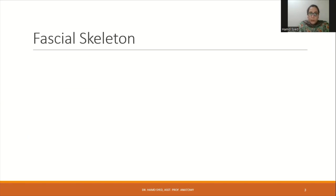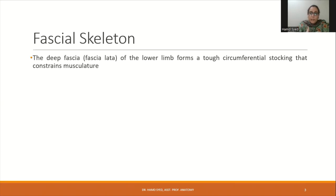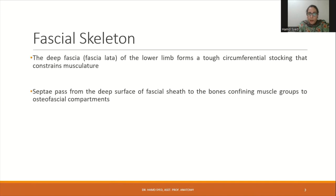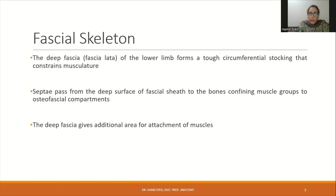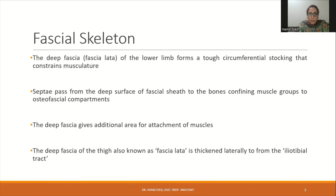Let's start with the fascial skeleton. If we observe the lower limb, the deep fascia forms a tough circumferential stocking which constrains the musculature — this is known as the fascia lata of the lower limb. Septa pass from the deep surface of this fascia lata to the bones, dividing the muscles into several osteofascial compartments. The fascia lata also gives additional attachment for the muscles and is thickened laterally to form the iliotibial tract.